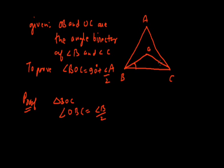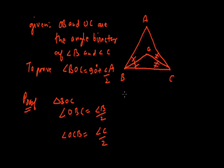Same way, angle OCB is half of angle C, because OB and OC are the angle bisectors, so these two pairs of angles are equal. We can say OBC is half of angle B, and OCB is half of angle C.